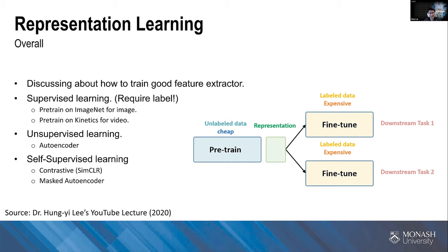For supervised learning, a large-scale labeled dataset is required, but labels are expensive. So people turn to unsupervised learning like autoencoders to reconstruct input data, and self-supervised learning like SimCLR using contrastive learning or Masked Autoencoder using masking mechanisms. The main idea is: instead of starting with labeled data, we use self-supervised learning to train model parameters from scratch to a preliminary level.